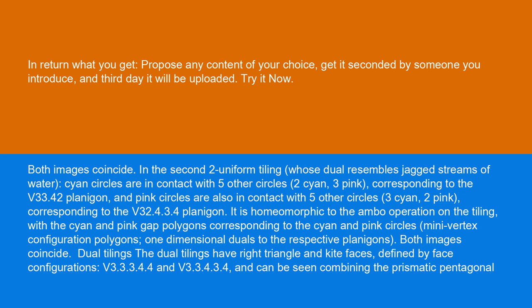In the second two-uniform tiling, whose dual resembles jagged streams of water, cyan circles are in contact with five other circles — two cyan, three pink — corresponding to the version 33.42 planigon. And pink circles are also in contact with five other circles — three cyan, two pink — corresponding to the version 32.4.3.4 planigon.